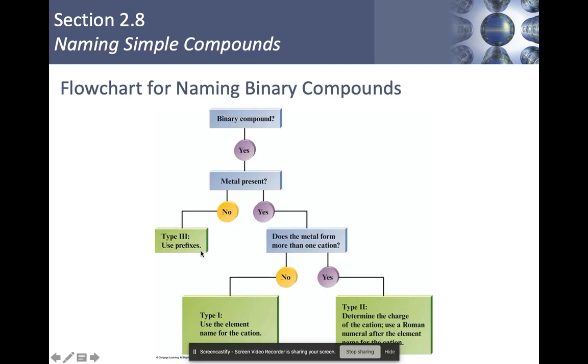Here's our flowchart for naming binary compounds. Things you should ask yourself first. Is it a binary compound? Yes. If so, then is there a metal? If there is not a metal, then we use those prefixes mono, di, or tri. If the answer is yes, there is a metal, then we have to ask ourselves, do we have anything that can form more than one charge? If the answer to that is yes, then we use a Roman numeral. If the answer to that is no, then we name it normally like we did with type 1.